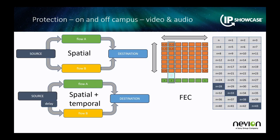It's worth saying that the audio world hasn't traditionally had as much of the concept of diversity and protection routing as we've intrinsically introduced with video. Spatial diversity — what we call 2022-7 — can be applied equally well to audio flows or any other real-time RTP flow as it can to video flows. We also have other techniques: both temporal diversity, and if you're going outside of campus, applying protection like FEC to a flow. And of course, in addition to this, there is ARQ — requesting packet resends — which is part of the work that RIST have been looking at.